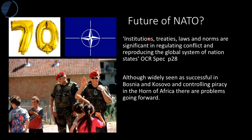How significant is NATO's role in regulating conflict and reproducing the system of nation states? NATO has been very successful — examples include Bosnia and Kosovo, areas created when the former Yugoslavia broke up after 1991. They've also been really successful in the Horn of Africa, allowing shipping to move into the Arabian Sea and Indian Ocean, where previously vessels had come under attack from pirates launching attacks from Somalia.